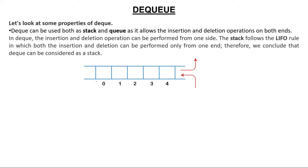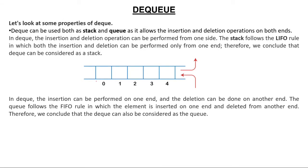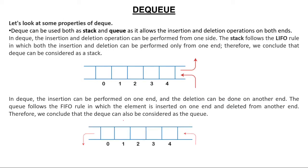Double ended queue is also acting like a regular queue, because if you take deletion from one side and insertion from the other side, it is also acting as a queue. So double ended queue acts both like a stack — that is LIFO, last in first out — and also like a queue — that is FIFO, first in first out.